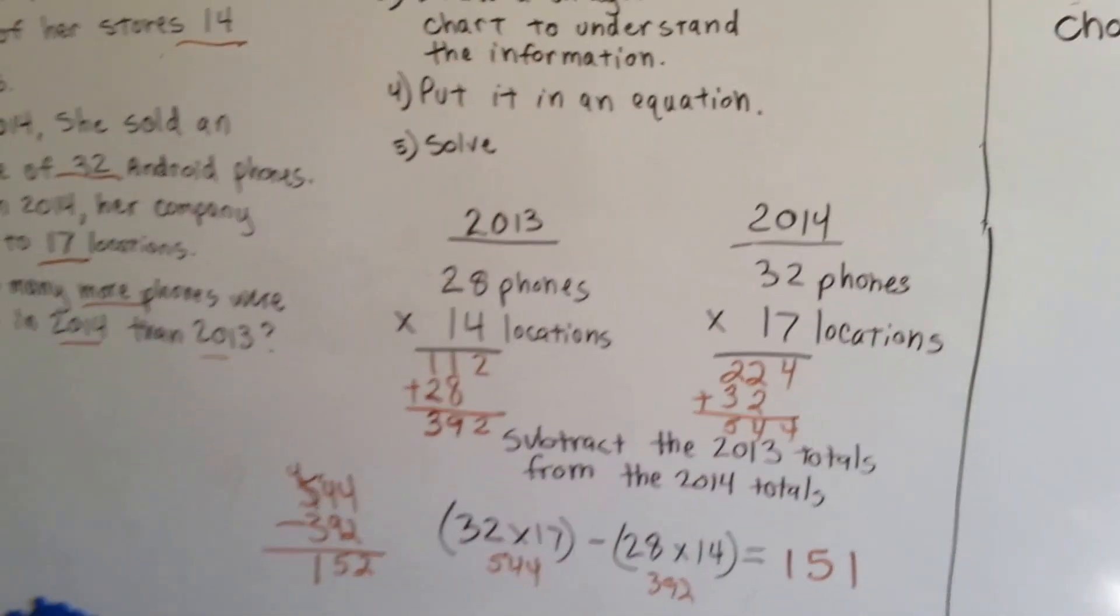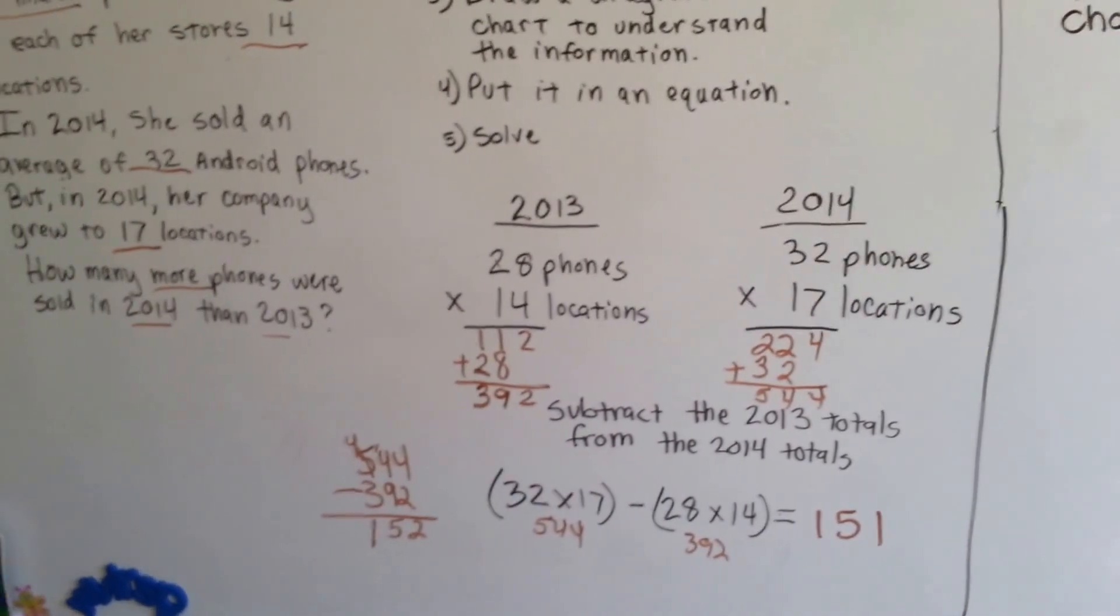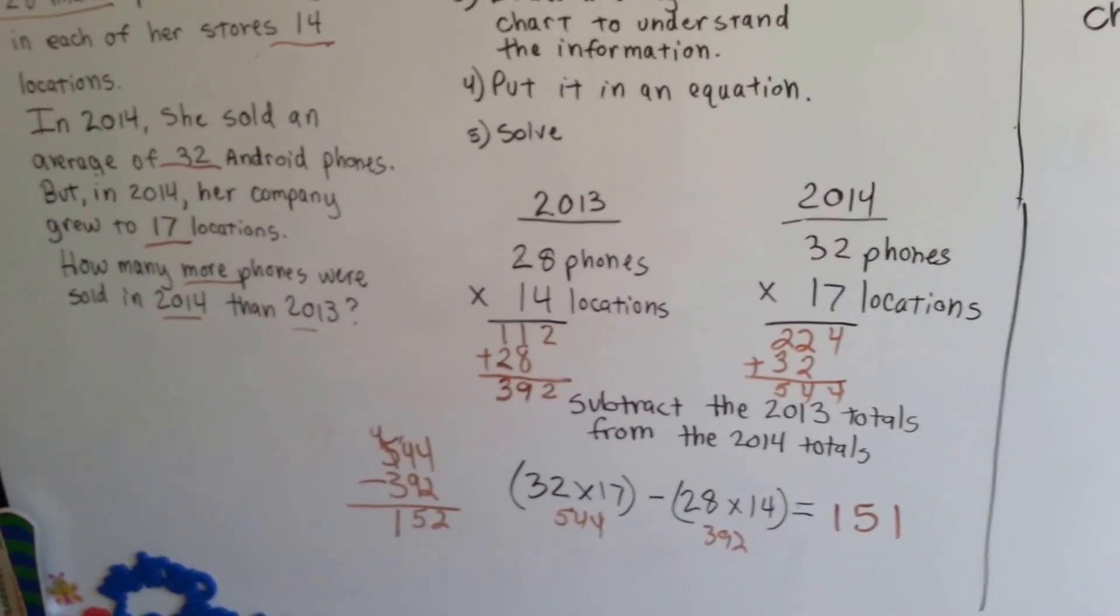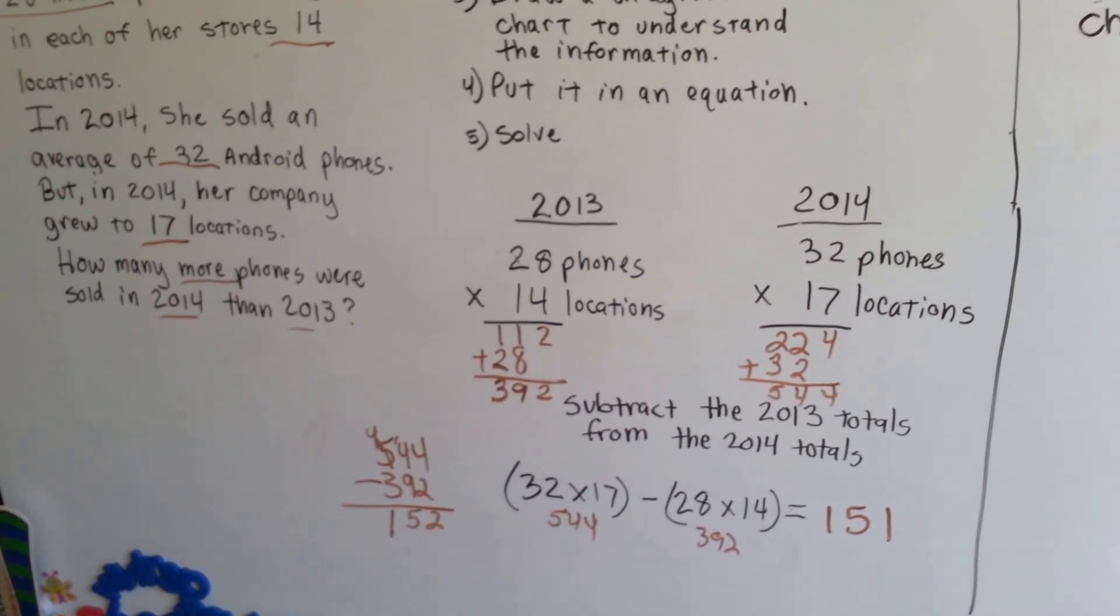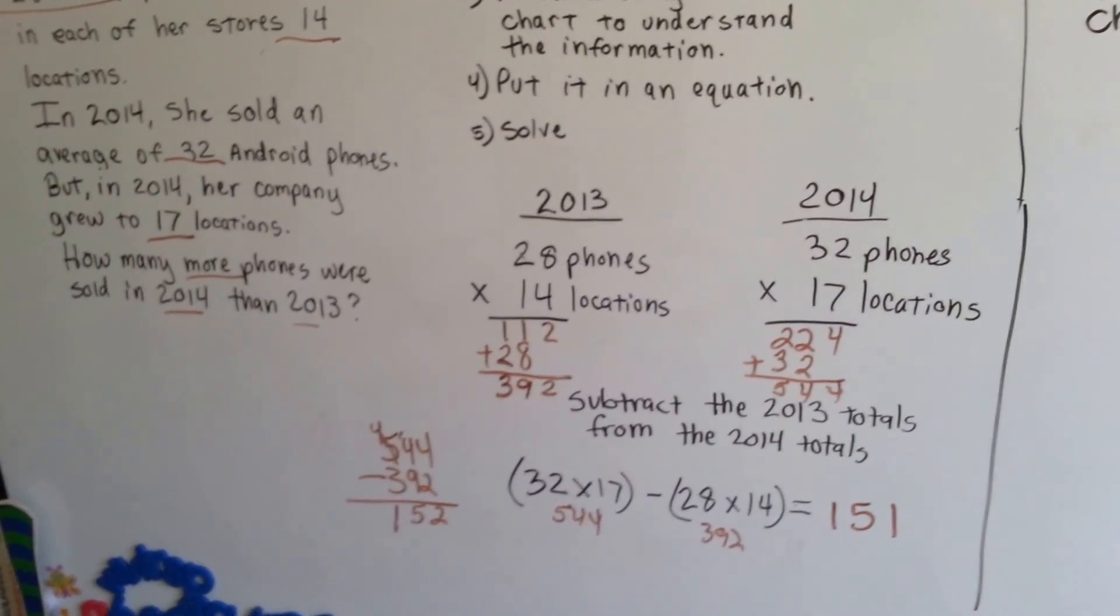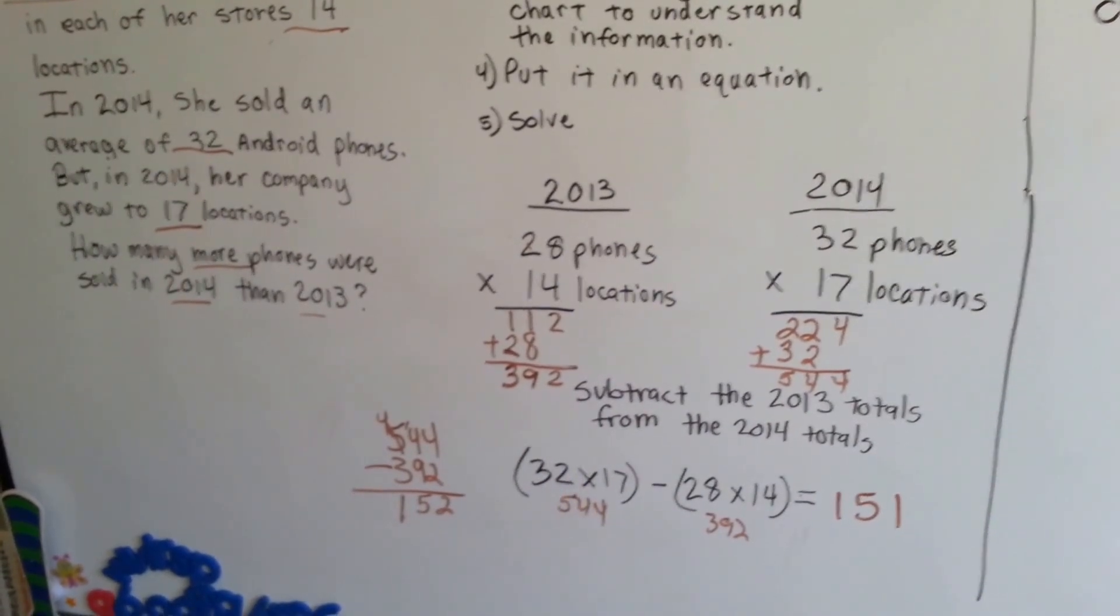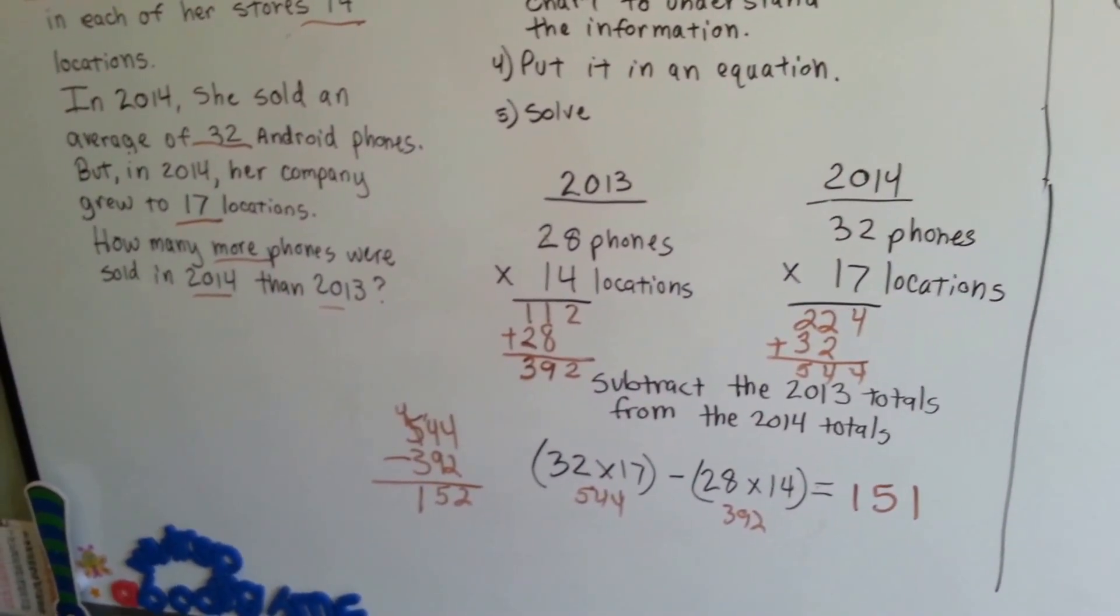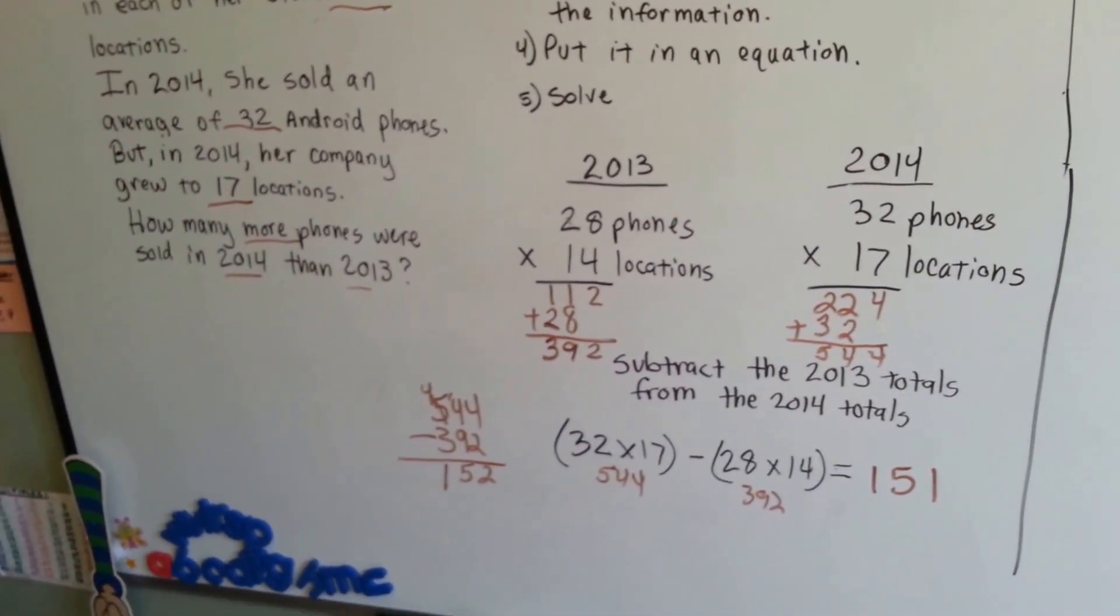Isn't that amazing how we were able to do that? Lots of steps to it, but we were able to do it. You have to sort out the information, make yourself a chart, figure out what you need to do, make an equation, and then solve it. And remember that parentheses are always solved first. Then you multiply or add or subtract. So if the multiplication is in the parentheses, then of course you're going to do those first. Let's try one more.